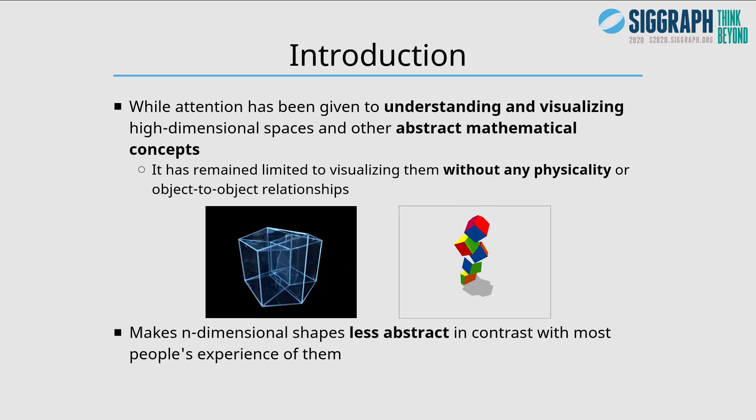While attention has been given to understanding and visualizing high-dimensional spaces and other abstract mathematical concepts, it has remained limited to visualizing them without any physicality or object-to-object relationships. For example, on the left this traditional representation of four-dimensional hypercubes just looks like a jumble of lines, whereas on the right hypercubes are physical objects that can collide. This makes n-dimensional shapes less abstract.